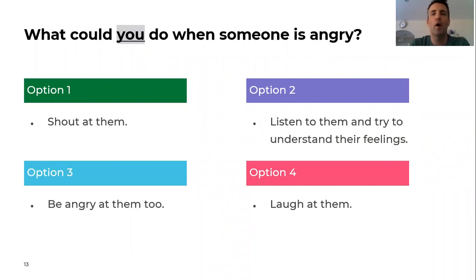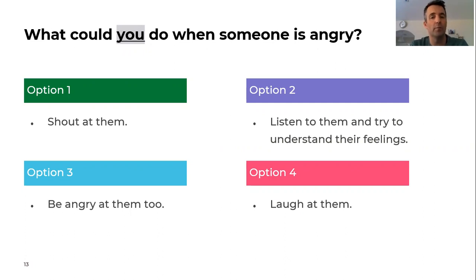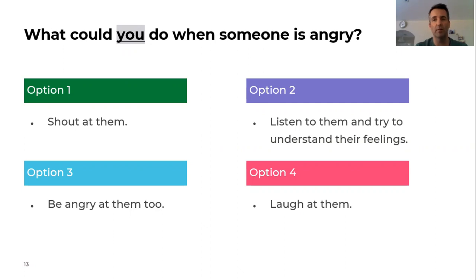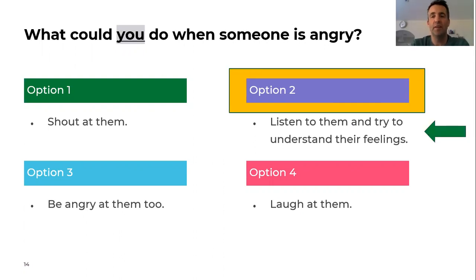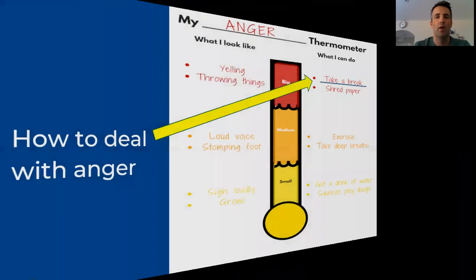What could you do to help somebody else who is angry? Four options: could you shout at them, listen to them and try to understand their feelings, be angry at them too, or laugh at them? Pause the video and have a think. The answer is option two — listen to them and try to understand their feelings. Shouting back or being angry too wouldn't solve the situation, and laughing isn't understanding.